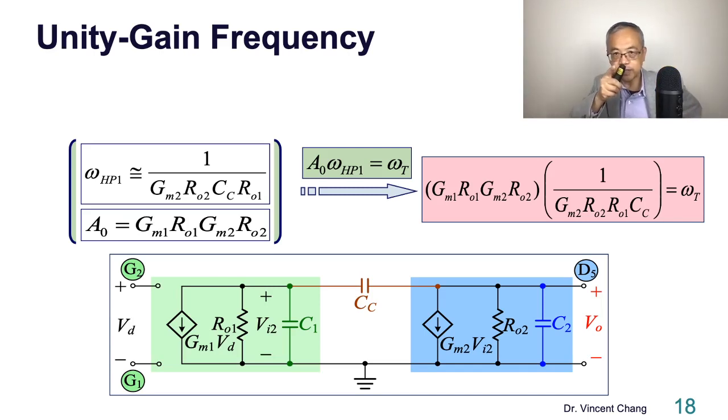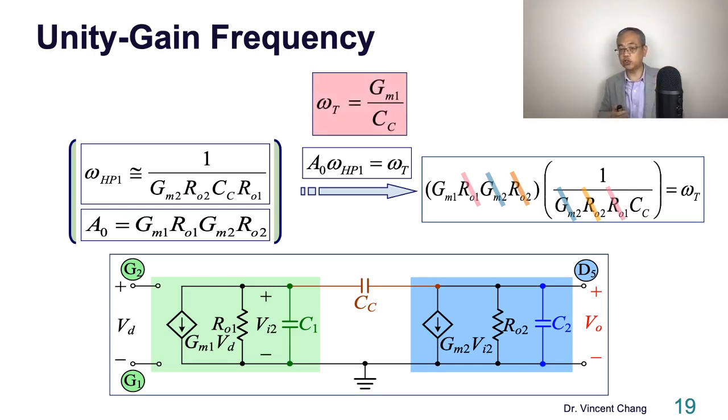So which one got cancelled out? G1 cancelled out. GM2 cancelled out. Which one? G2 got cancelled out. So then you see the transconductance of the first stage divided by the Miller.